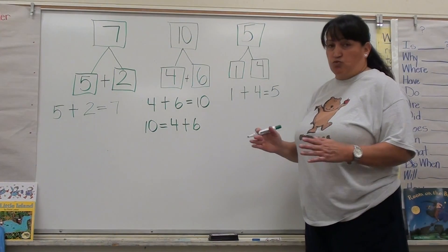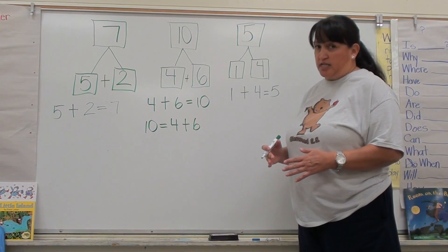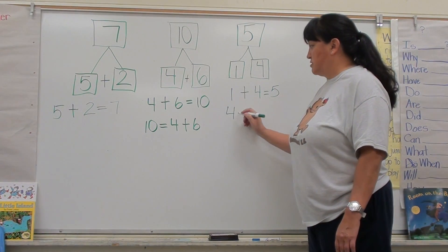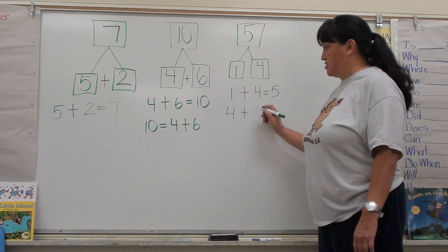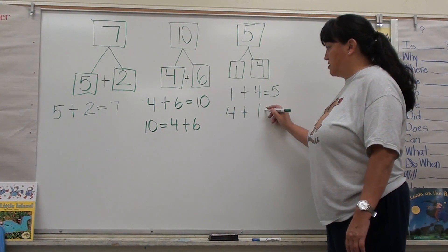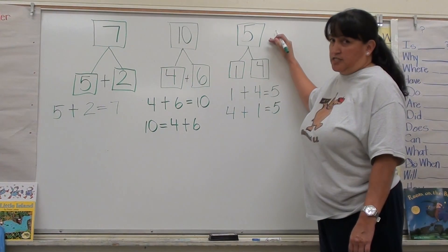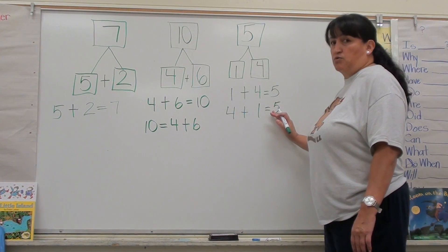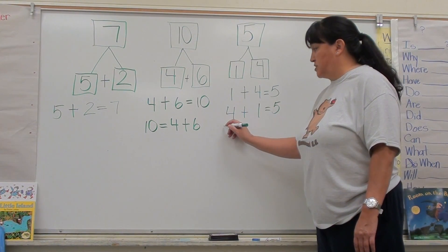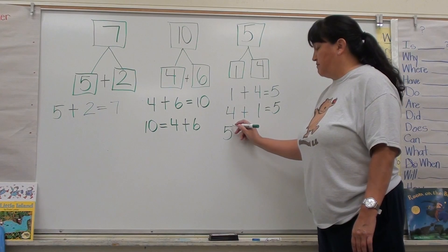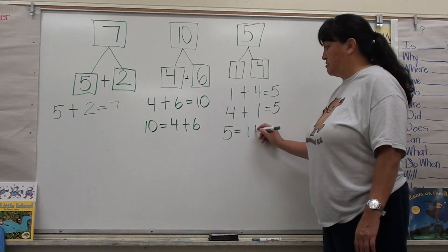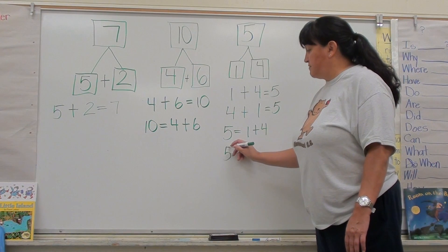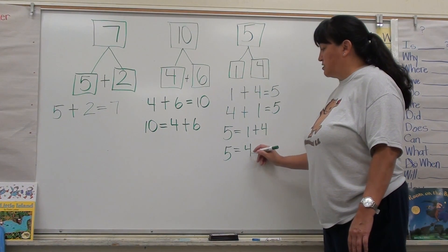I can also switch the parts to make a number sentence — I can put four plus one equals five. The whole number never changes; it stays the same. My parts can switch but still equal five. And again, I can also put the whole number first: five equals one plus four, or switching the parts, five equals four plus one.